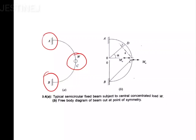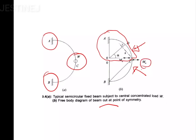We take the free body diagram. The second diagram represents the free body diagram of the beam cut at the point of symmetry. Both sides of this semi-circular beam are symmetric, so the analysis on one side is repeated on the other. We only consider up to the half portion. Some M0 is given, representing the bending moment at the cut. If M0 is acting anti-clockwise on one side, there will be a clockwise moment on the other to keep the structure stable.